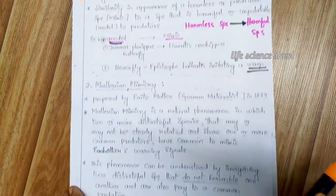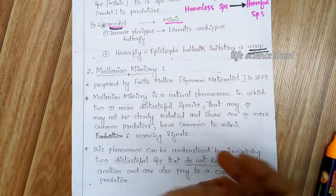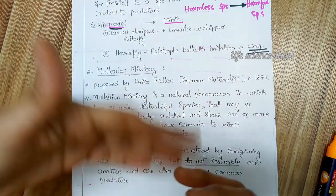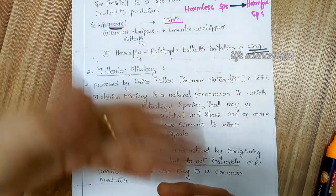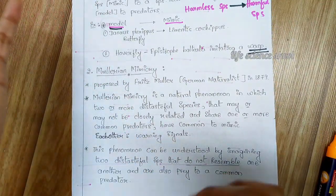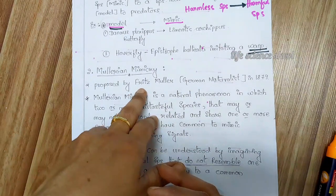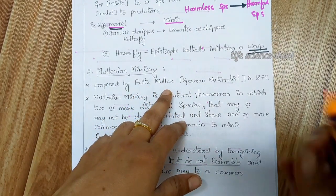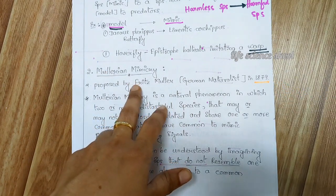Moving on to the next important one: Mullerian mimicry. Just as Batesian mimicry was named after its proposer, Mullerian mimicry was proposed by Fritz Muller, a German scientist, in the year 1879. That's why it is named Mullerian mimicry.